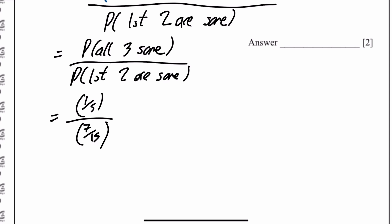I've used my fraction button. Top line, I'm putting in 1 over 5. And the bottom line, I'm putting in 7 over 15. And if I do that, I got an answer of 3 sevenths. So there we have it, 3 sevenths. Done.